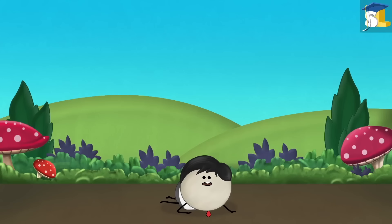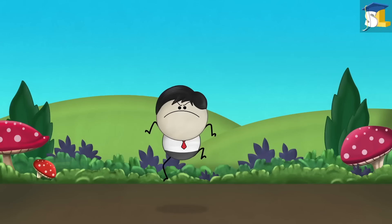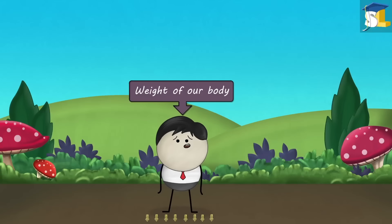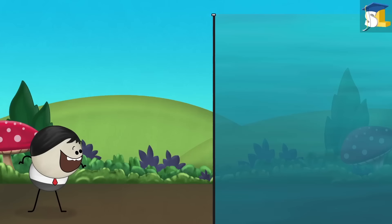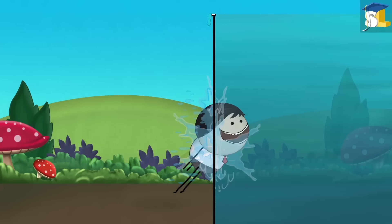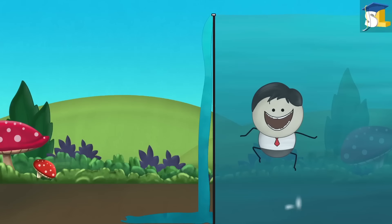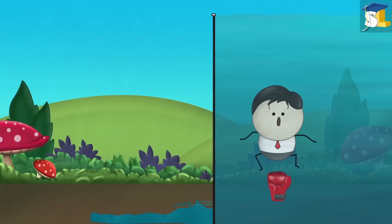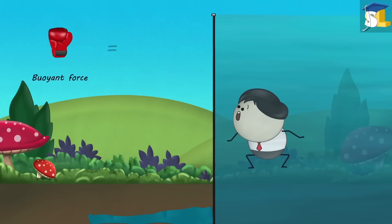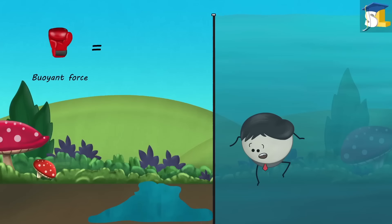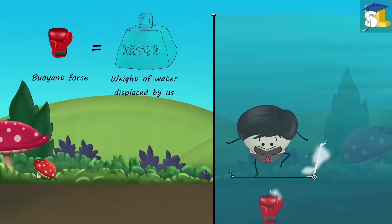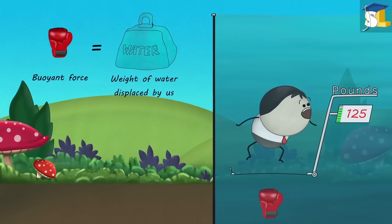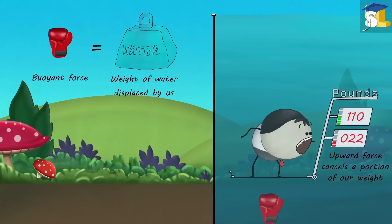Gravity always pulls us downwards. Hence, the weight of our body always acts downwards, whether we are on ground or in water. However, according to Archimedes Principle, when we are in water, we experience an upward force — that is, buoyant force — which is equal to the weight of water displaced by us. This upward force cancels a portion of our weight, causing us to weigh less in water.